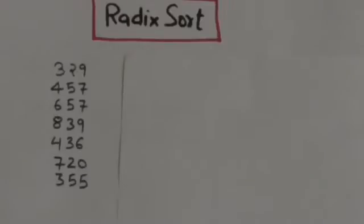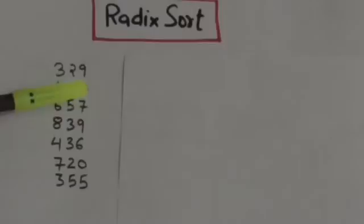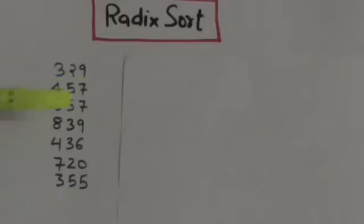First of all we will write these numbers in such order so that their least significant digits are in increasing order. If there are two numbers having the same least significant digit, then first we will write that number which appears first in the list. For example, see these two numbers 457 and 657. These two numbers have the same least significant digit, that is 7, but first we will write 457 then we will write 657 because 457 appears before 657 in the list.